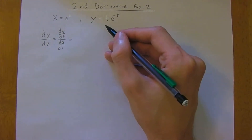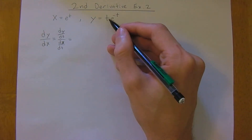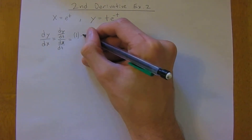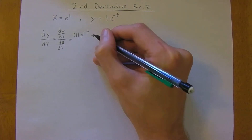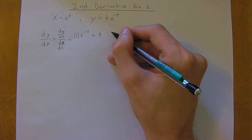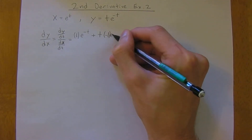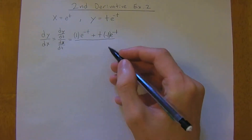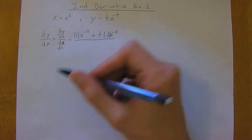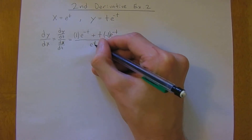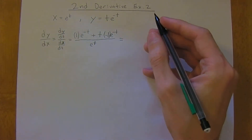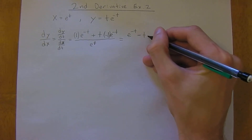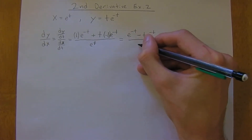The derivative of y is going to be the derivative of the first term times the second, so the first term gives 1 times the second, plus the first times the derivative of the second, which is going to be negative 1 e to the negative t. Let's take the derivative of the bottom first — the derivative of e to the t is just e to the t. So we can simplify this. We have e to the negative t minus t·e to the negative t, all over e to the t.